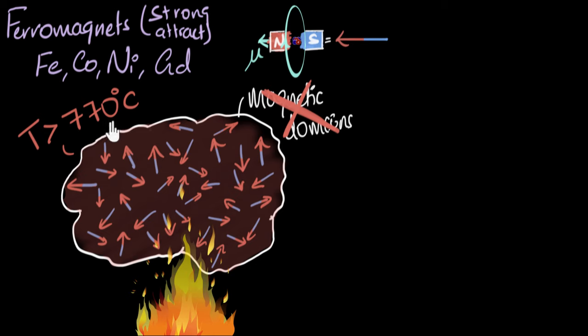And this temperature above which a ferromagnet loses its magnetic domains and becomes a paramagnet, we give a name to that temperature. We call it the Curie temperature. And I'll let you go and research who is this named after? Is it Marie Curie or her husband Pierre Curie? Okay, it's for you to do that.